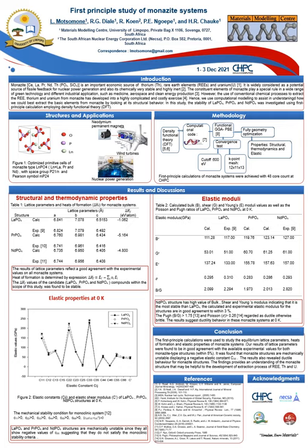Figure two presents the elastic constants and elastic shear modulus of monazite structures. Elastic constants are essential for determining the mechanical properties that define mechanical stability of compounds. The monazite systems are mechanically unstable since they show a negative value of C35, which suggests that the monoclinic stability criteria is not satisfied. On elastic modulus, presented in Table 2, NdPO4 has a large value of bulk, shear, and Young's modulus, indicating it is hard with a high degree of stiffness and not easily compressed. Monazite systems exhibit ductile behavior due to their values being greater than 1.75 and 0.26 for Pugh's ratio and Poisson's ratio respectively.